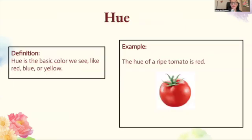Hue is the basic color we see, like red, blue, or yellow. For example, the hue of a ripe tomato is red.